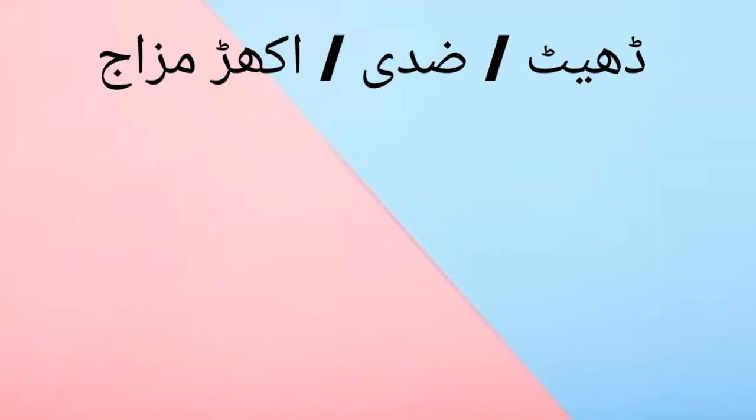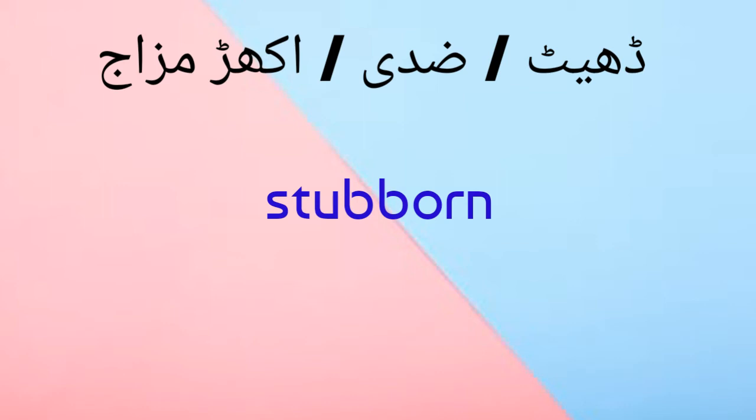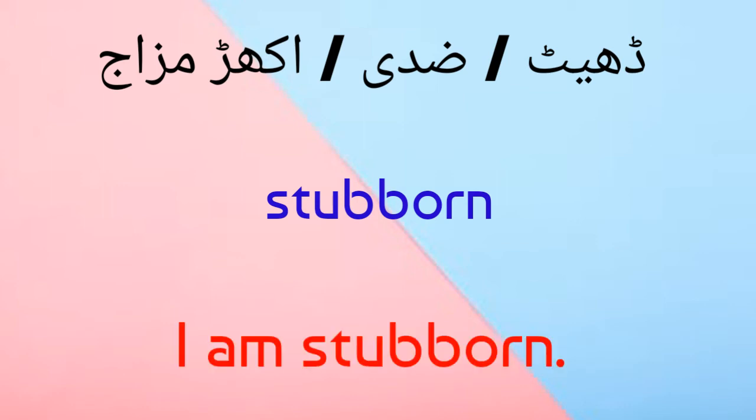دھیٹ، زدی یا اکھڑ مزاج — all of these are covered by one word: stubborn. I am stubborn. میں زدی ہوں، دھیٹ ہوں، یا اکھڑ مزاج ہوں.